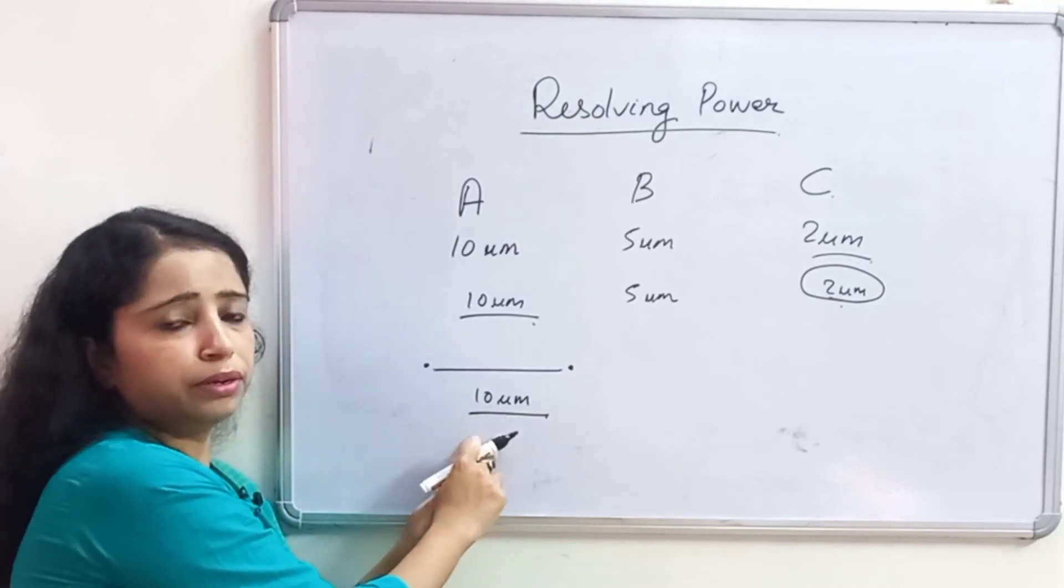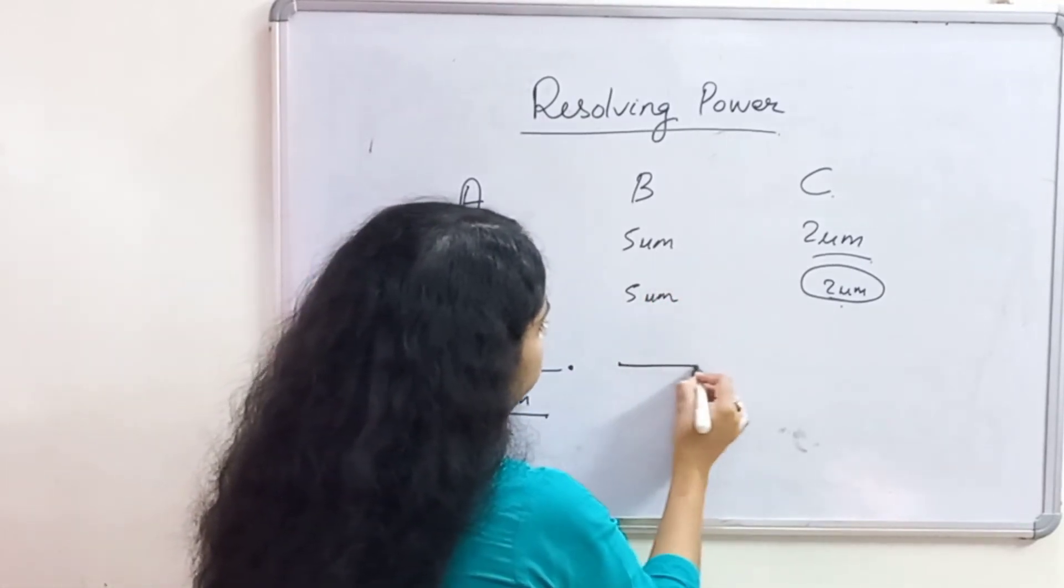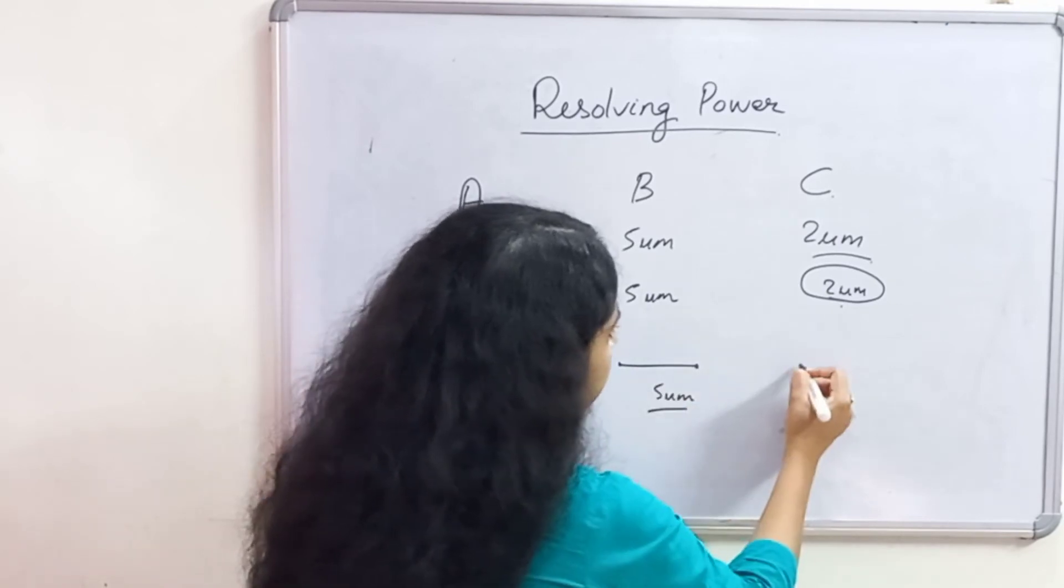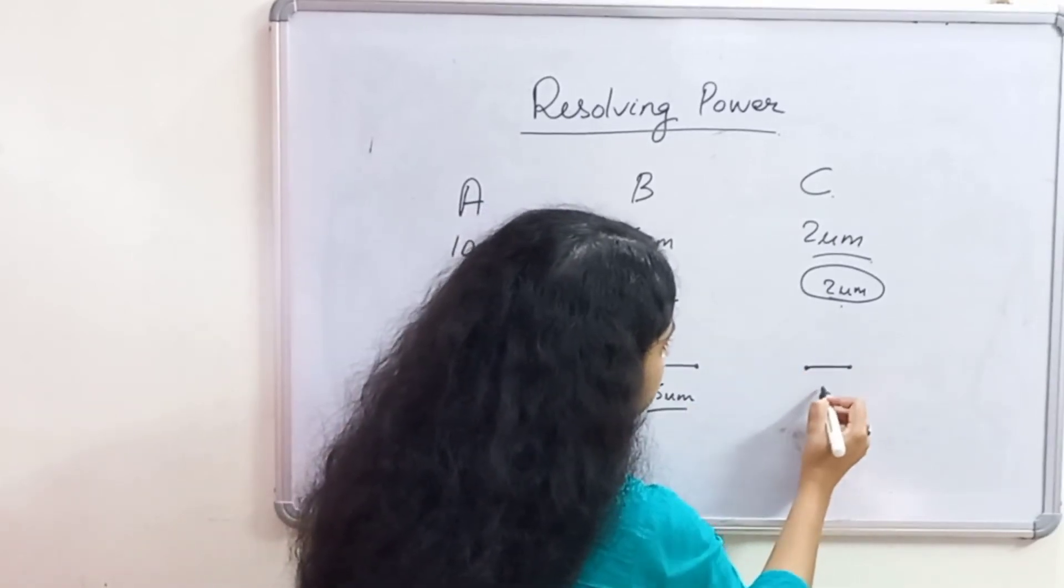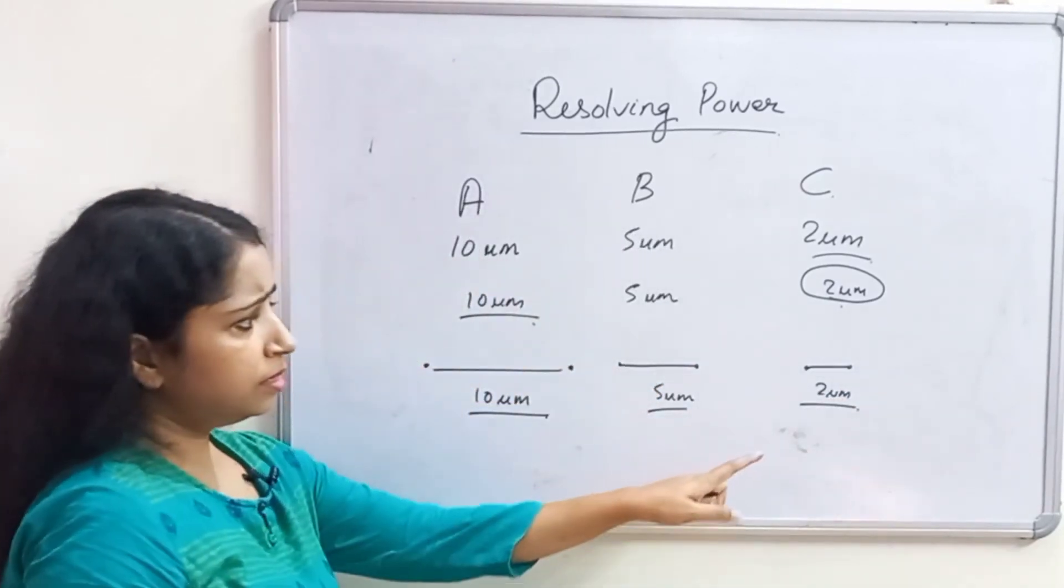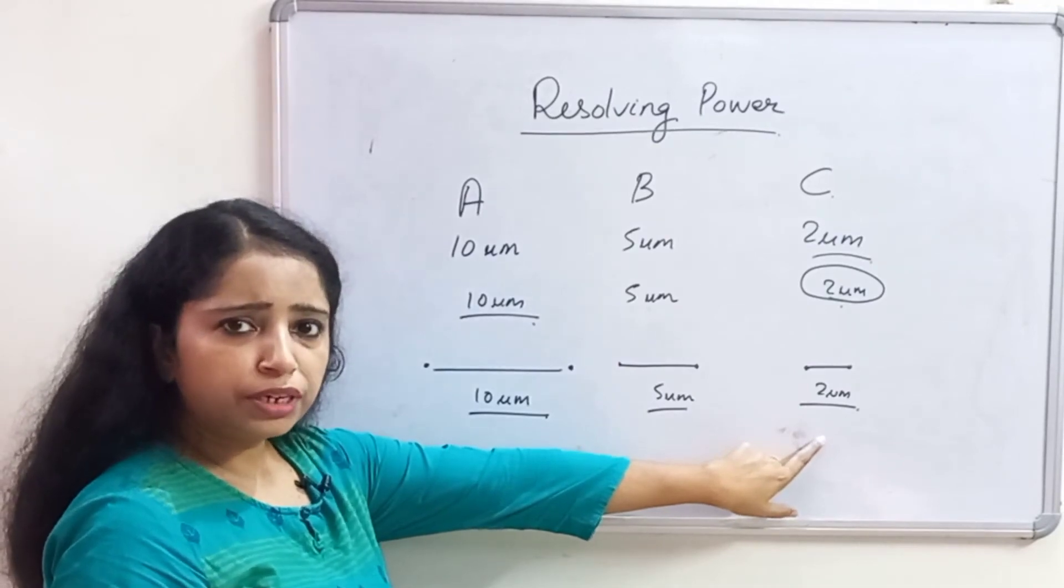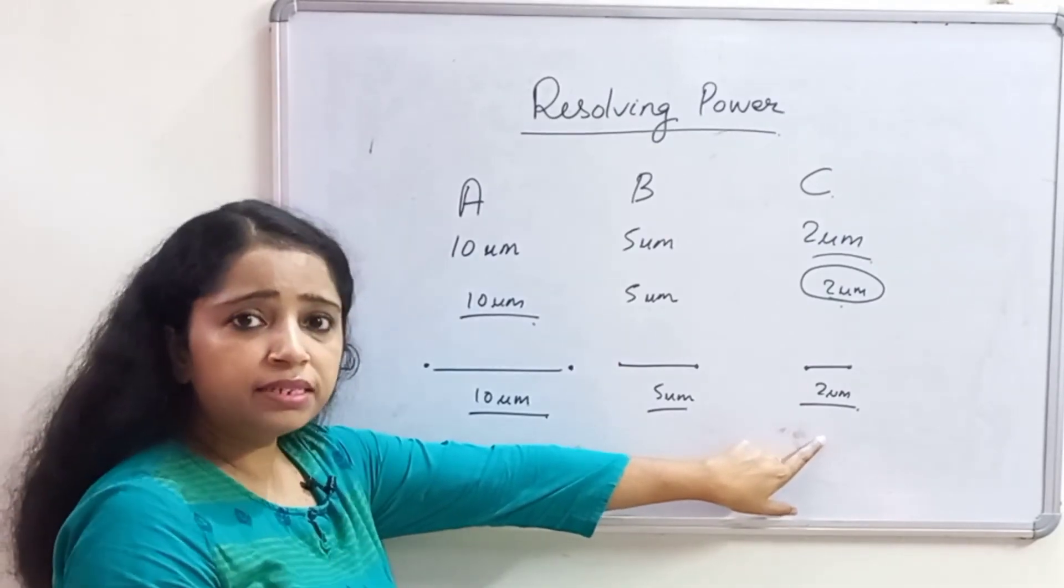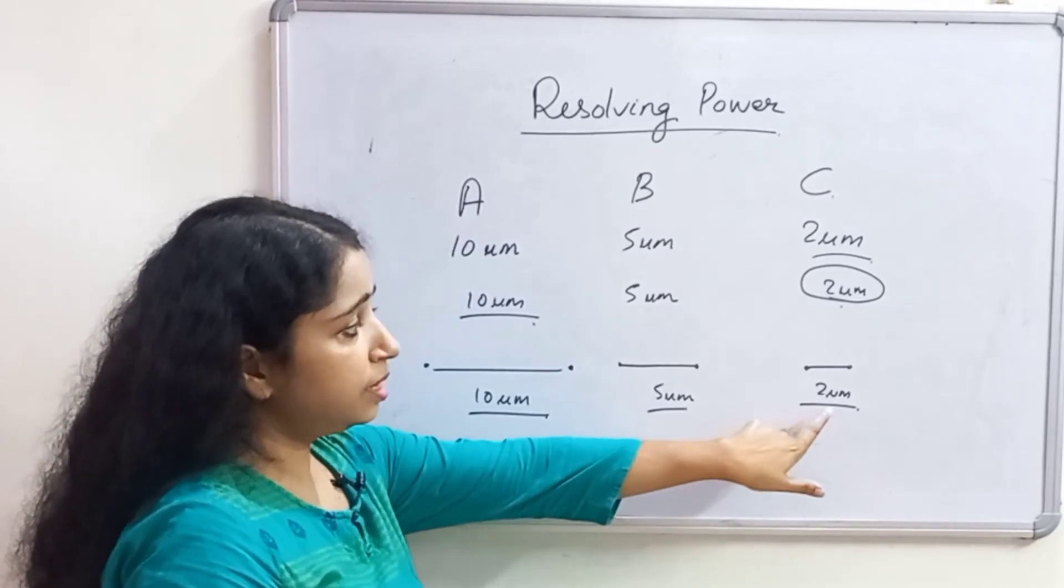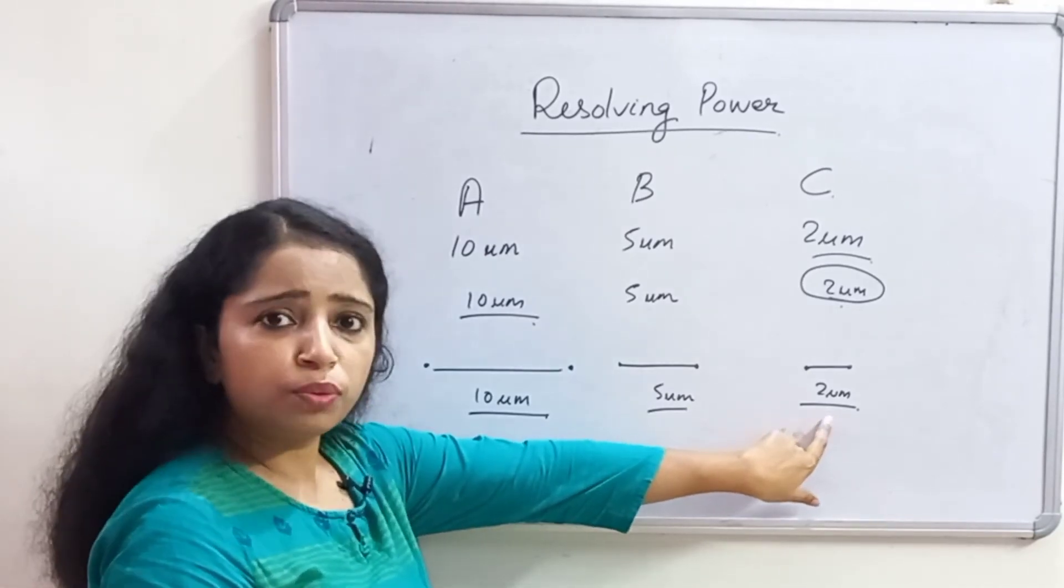So, C has the smallest limit of resolution but highest resolving power. Because the distance is 2 micrometer, it is less than B and A.